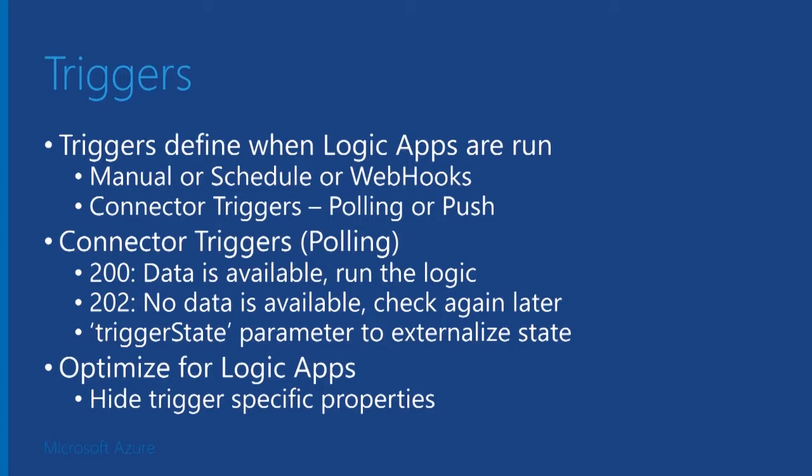This morning Stefan talked about triggers. Triggers are used to define when Logic Apps are run — it can run manually, based on a recurring schedule, or there are webhooks you can provide. But a trigger can also be defined by connectors, and it can be polling or push-based. In this example, I'm going to talk about how you can write a polling-based connector trigger. Stefan briefly talked about the 200 and 202 semantics.